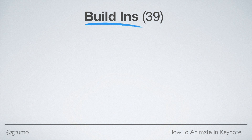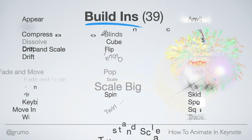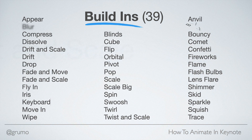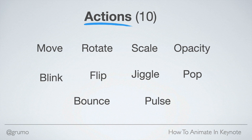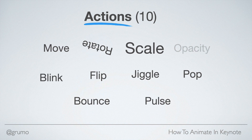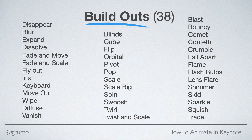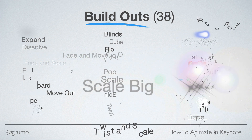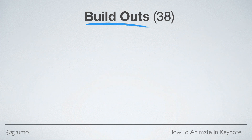In Keynote, you have 39 build-ins. Here are all of them. You have 10 actions and you have 38 build-outs, or 38 ways things can disappear. So imagine all the possibilities for you to create all kinds of animations.